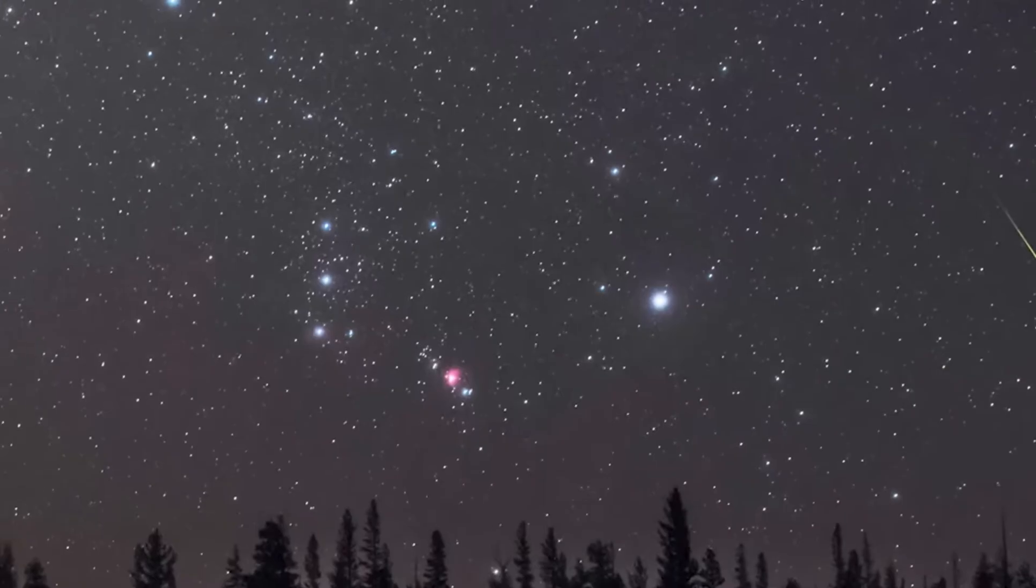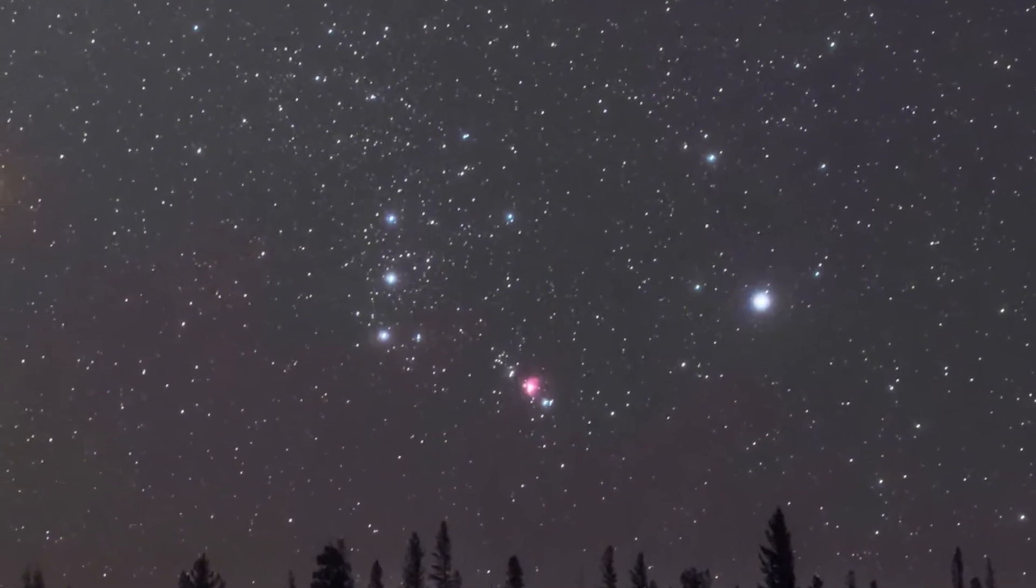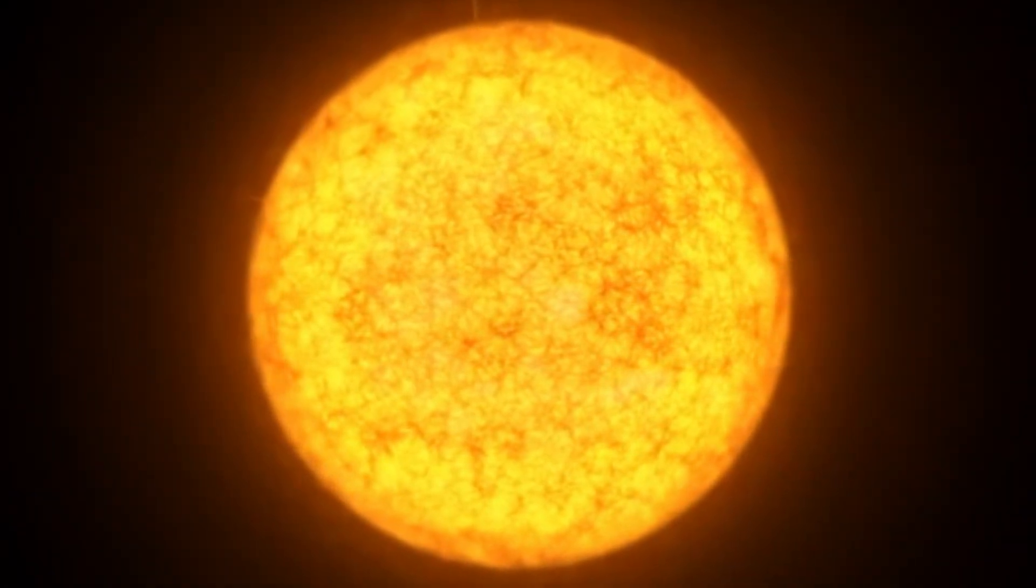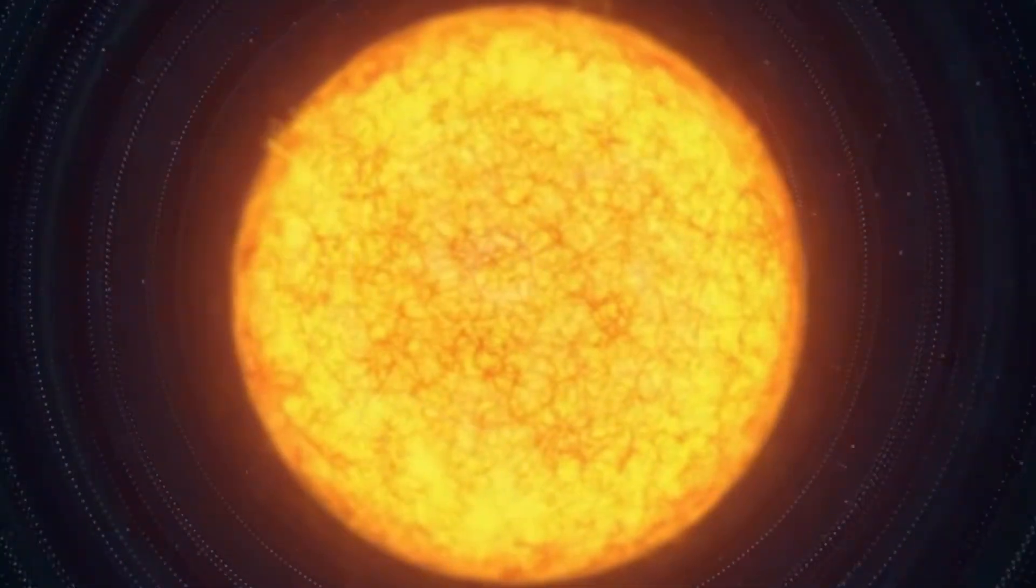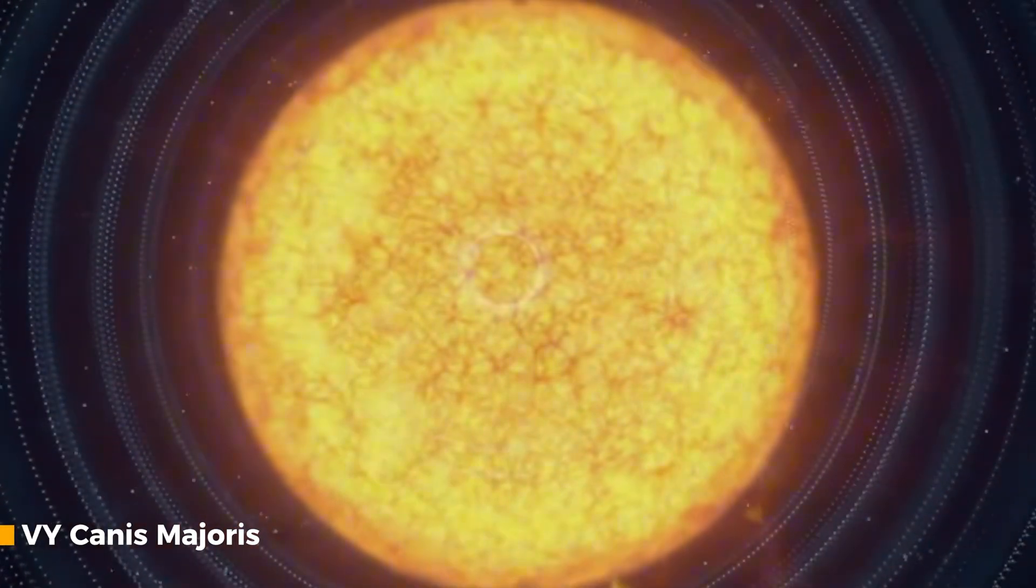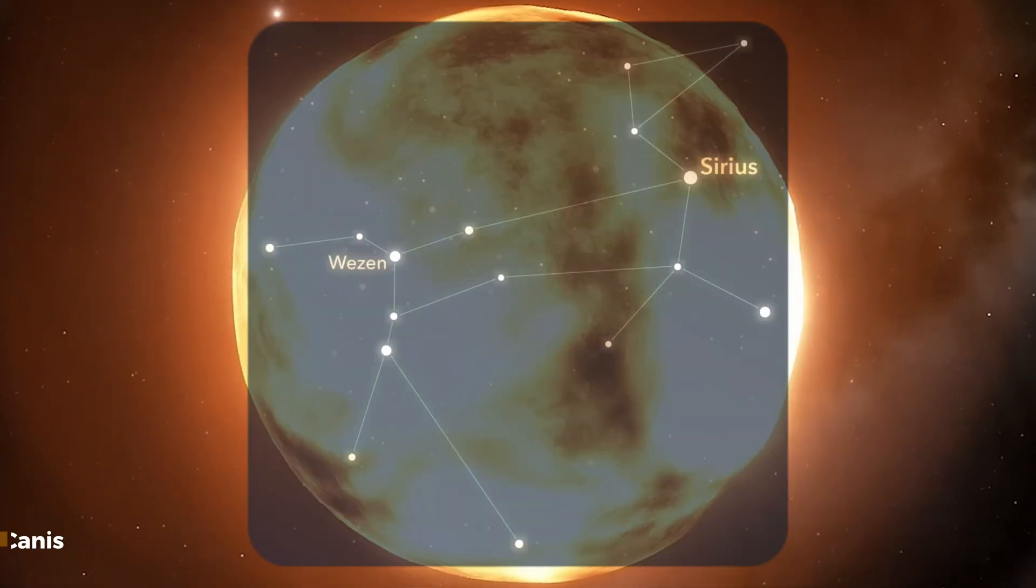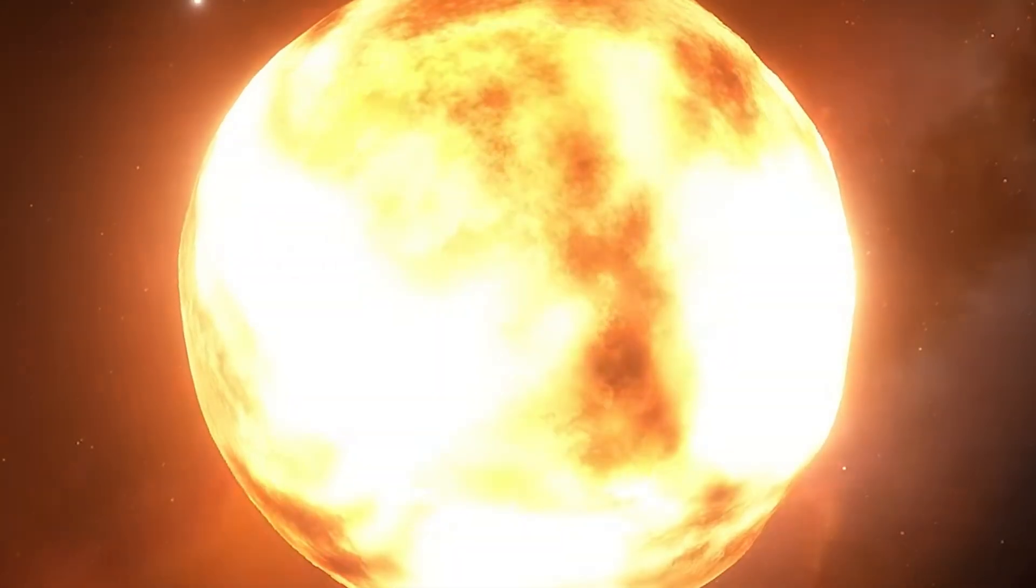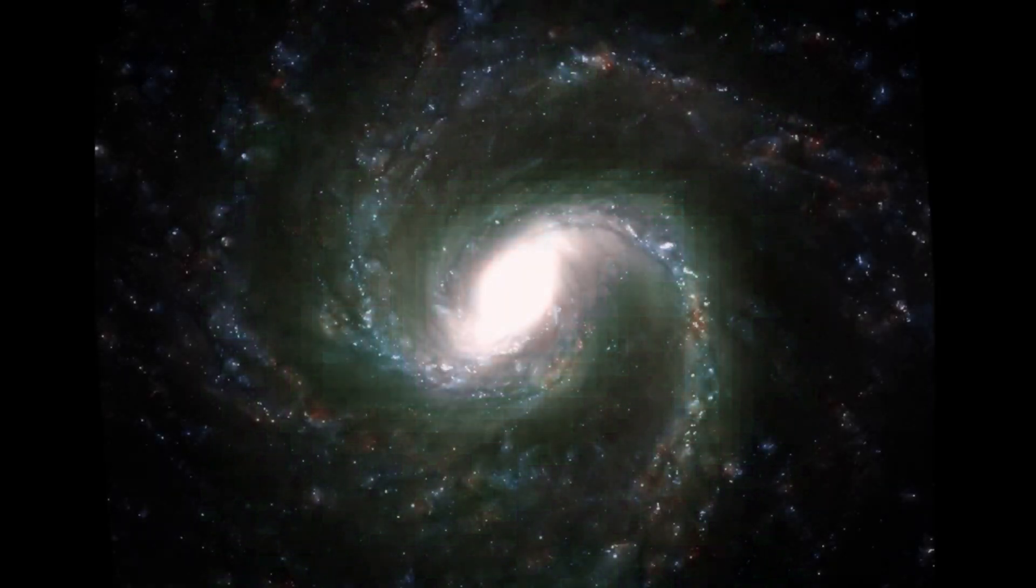Next is the red supergiant Antares, which is the brightest star in the Scorpius constellation. Antares, often referred to as the heart of the Scorpion, is the 15th brightest star in the night sky. It is 550 light-years away from our Earth. Another red supergiant on the list of those going to go supernova is Vy Canis Majoris, located in the constellation Canis Major, 5,000 light-years away from us. Vy Canis Majoris is a binary star system which contains one of the largest stars in our galaxy. It is as large as Jupiter's orbit.